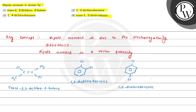The next is 1,4-dichlorobenzene, where chlorine atoms are at opposite positions on the ring. Then trans-1,2-dinitroethene, where the nitro group is attached at the trans position and hydrogen is on the other side.